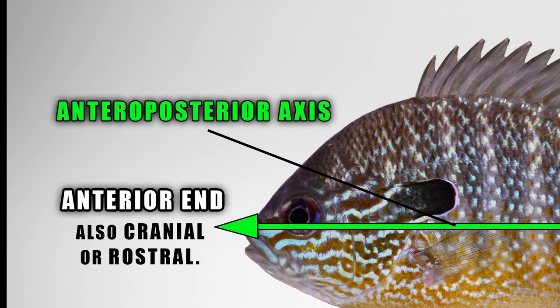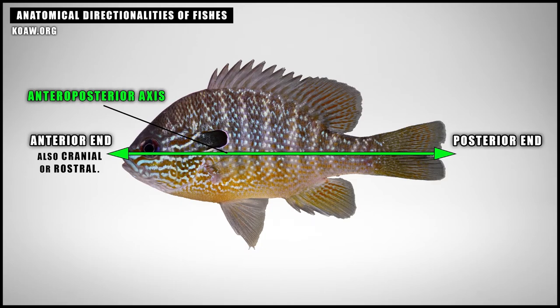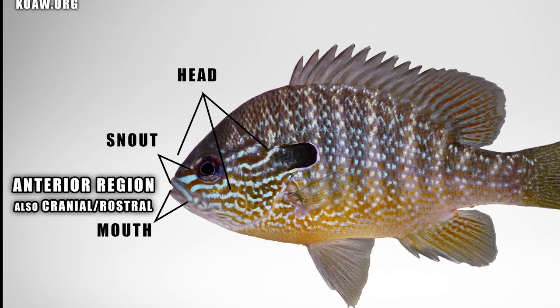Anterior-posterior axis. Anterior describes the direction towards the front of a fish. The anterior region of a sunfish is also called the cranial region, where the head, mouth, and snout exist. On certain fishes and other animals, this is also known as the rostral region.